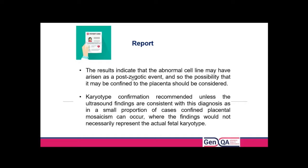In our report we obviously report the abnormal result but caveat it: the results indicate the abnormal cell line may have arisen as a post-zygotic event. In all abnormal CVS results we flag the risk of confined placental mosaicism, but with a completely biallelic result we put more emphasis on this. We state that the possibility the result may be confined to the placenta should be considered, recommend karyotype confirmation unless ultrasound scan findings are consistent with the diagnosis, and communicate this clearly to the referring clinician.